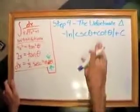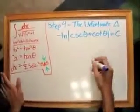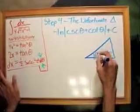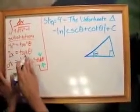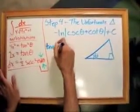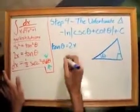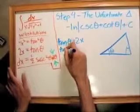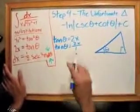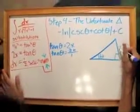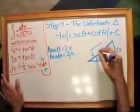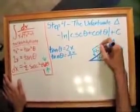Alright, now it's time for step four, the unfortunate triangle step. So, always start out with your triangle. This is a right angle. This is your theta. And so, you can solve for tangent here. And so, then you would know that if tangent theta equals 2x, that's the same as tangent theta equaling 2x over 1. So, you know that the opposite is 2x, and adjacent is 1, which means that the hypotenuse is 4x squared plus 1.